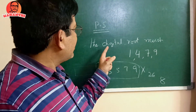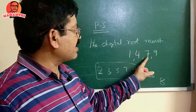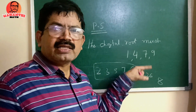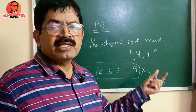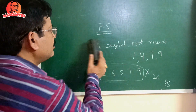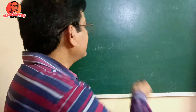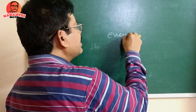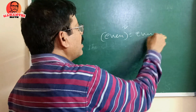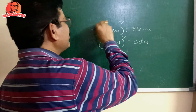Again, the digital root of a perfect square must be 1, 4, 7, or 9. If you get a digital root other than these four numbers, it cannot be a perfect square. Also, the square of an even number is even, and the square of an odd number is odd.